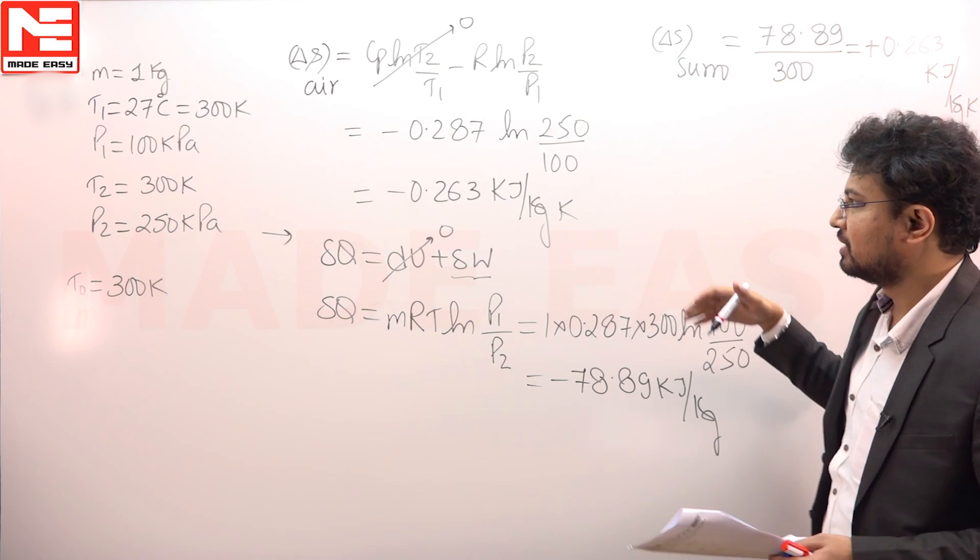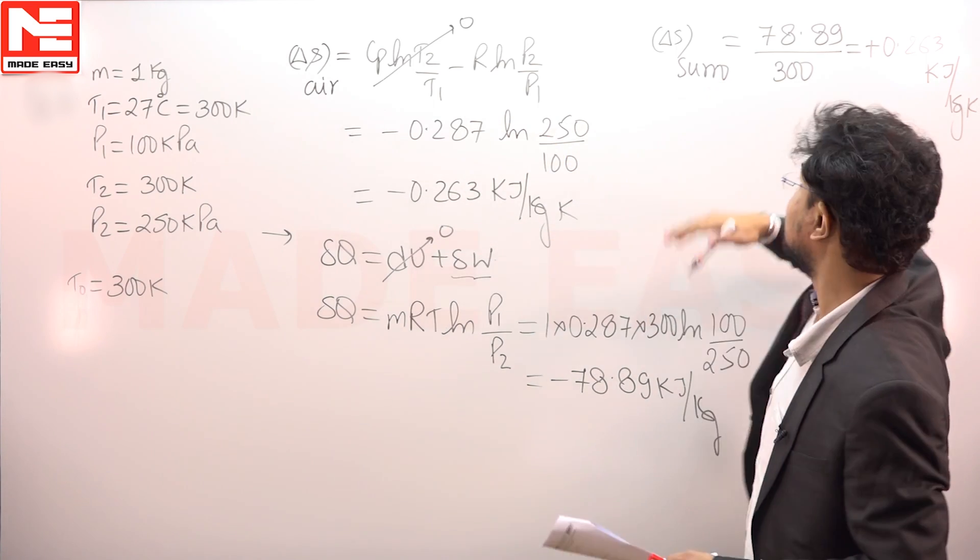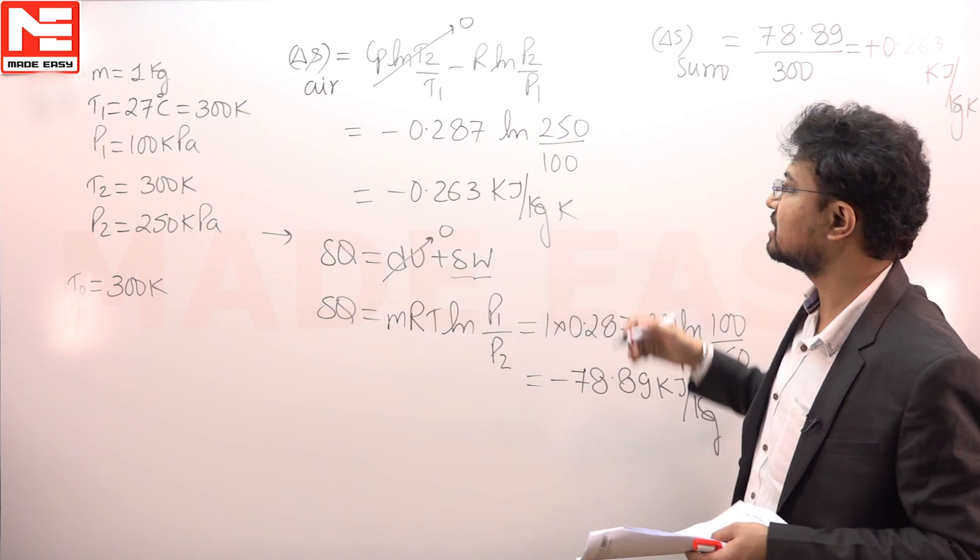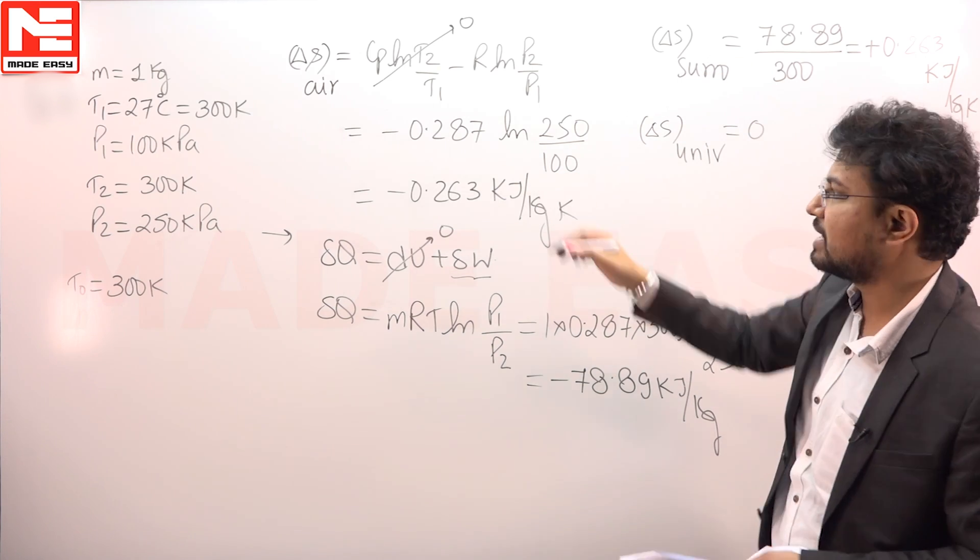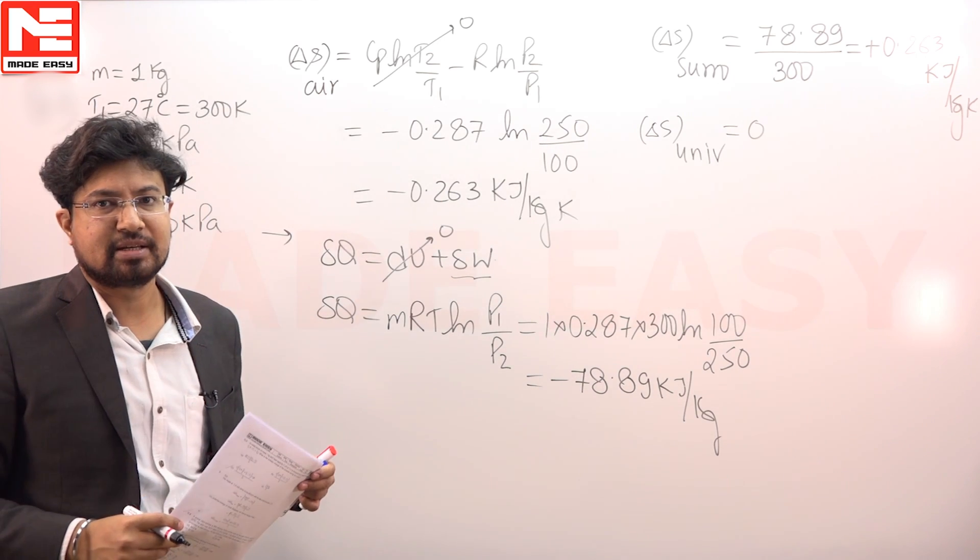Heat added in the surrounding. Entropy change of the air is negative and surrounding is positive. If we add them, the values are same. Delta S universe will come out to be 0. This is 0 on addition of these two. So we can say this process entire is reversible.